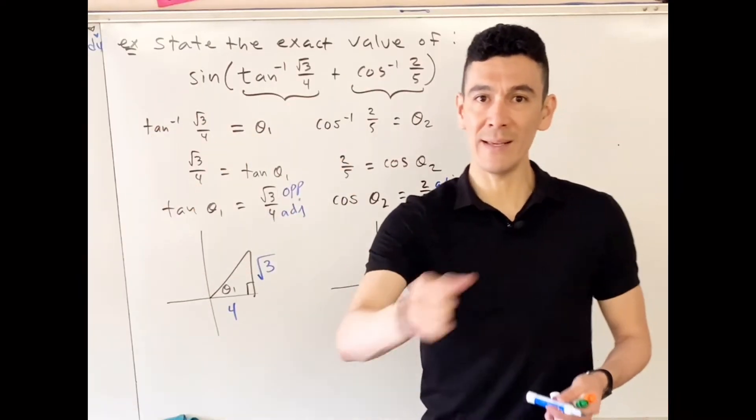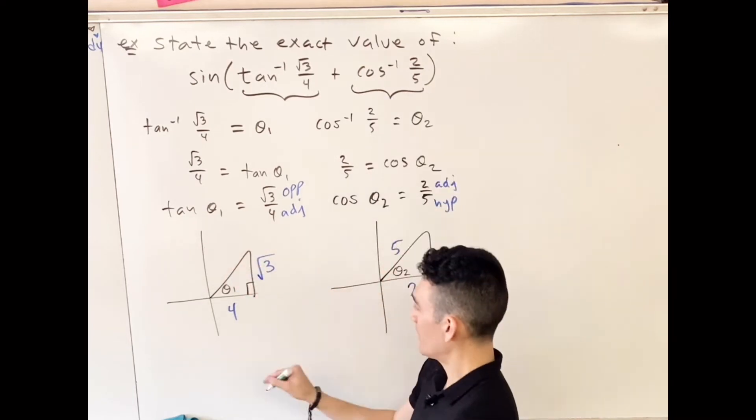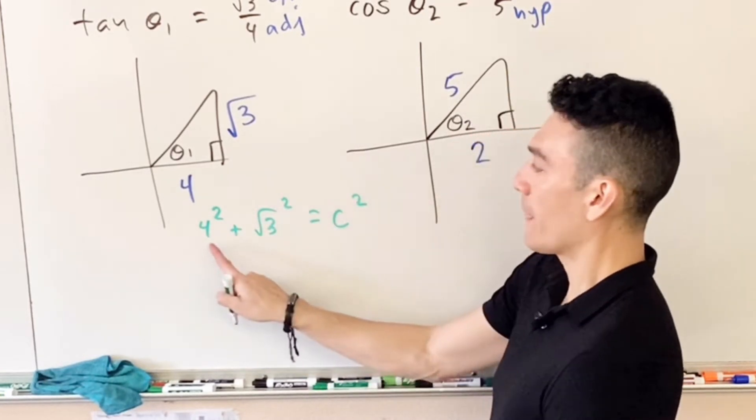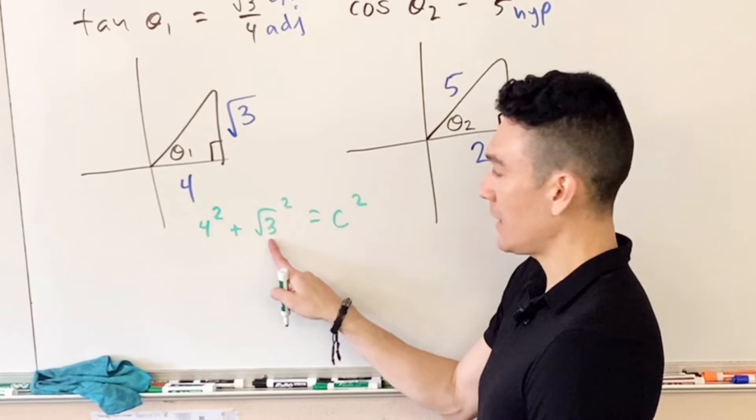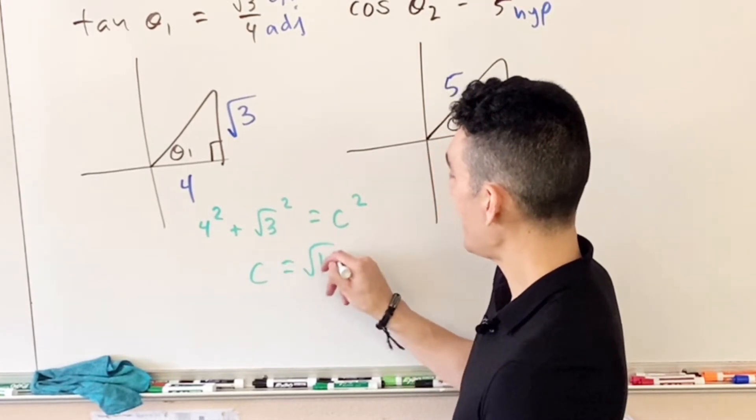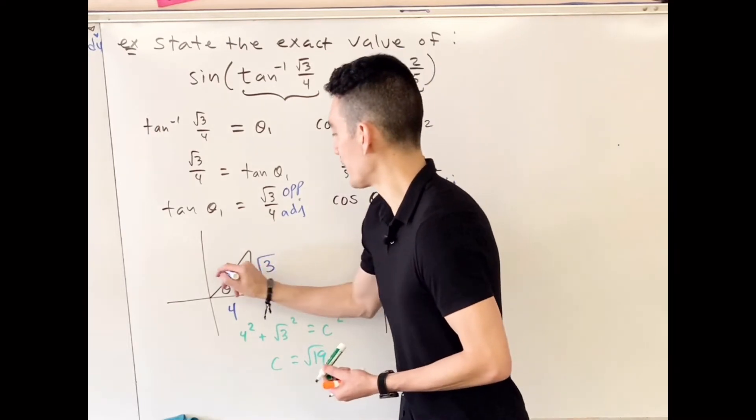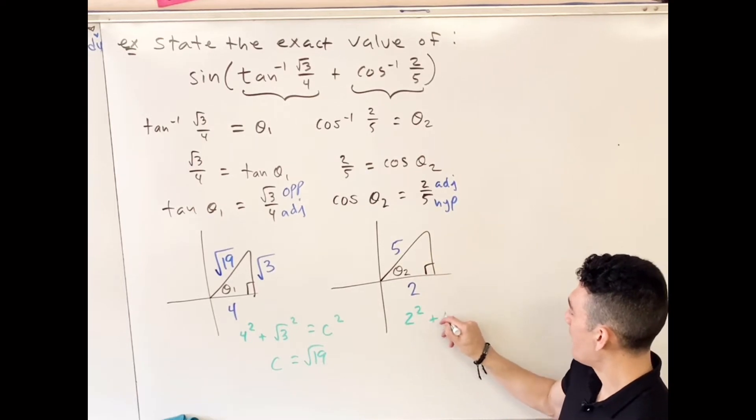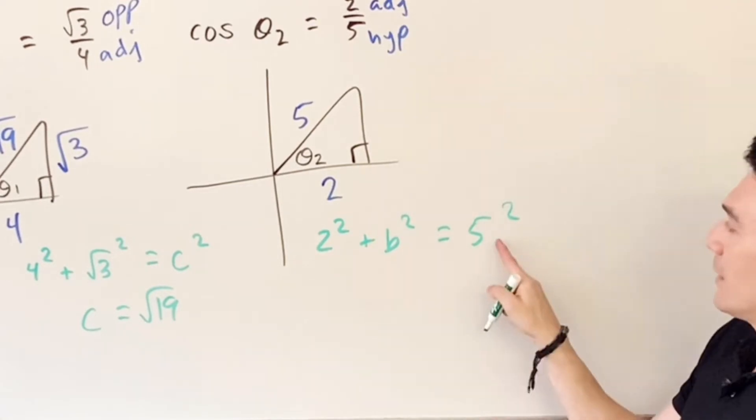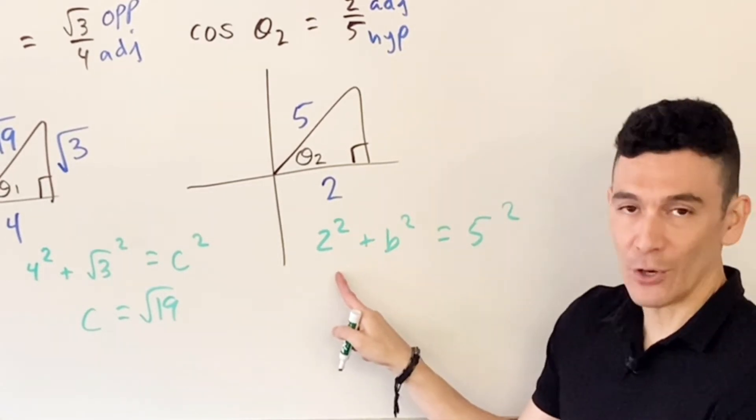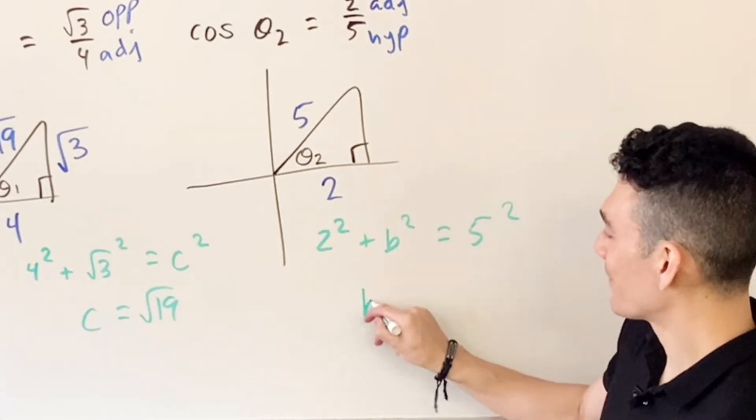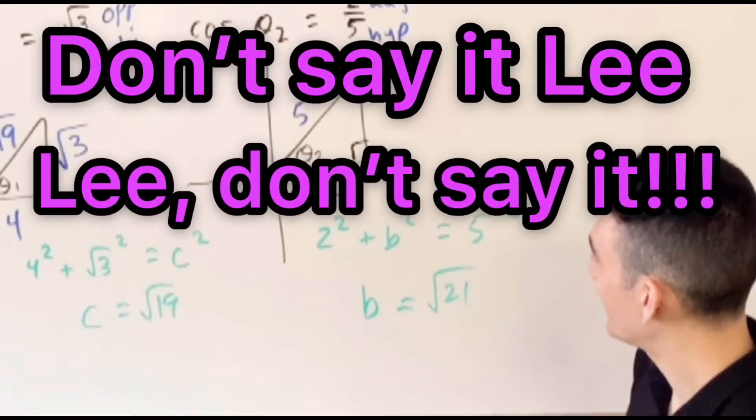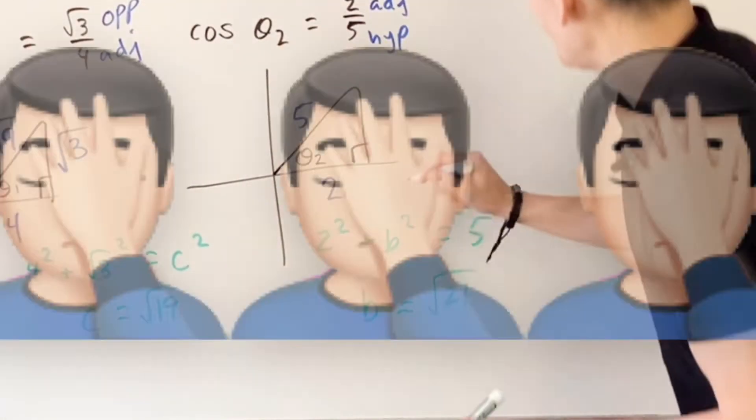Let's go Pythagorean: a squared plus b squared equals c squared. So we have 16 plus 3 is 19, square rooted stays that number, so we have square root 19. On the other triangle, a squared plus b squared equals c squared. 25 take away 4 is 21, but when you square root it, it's the square root of 21.